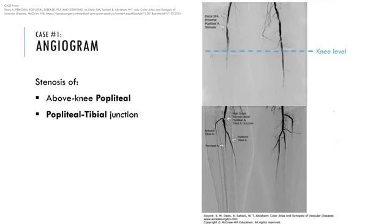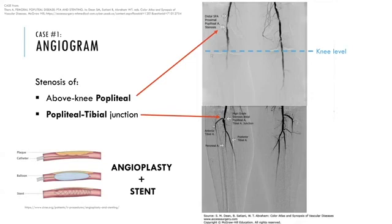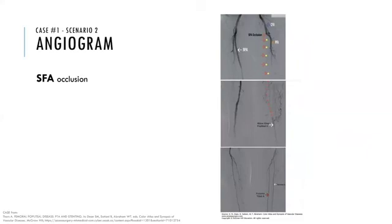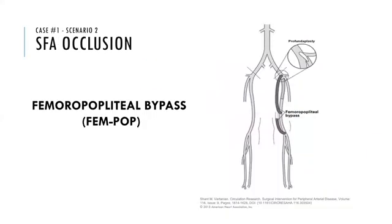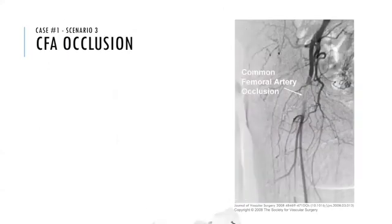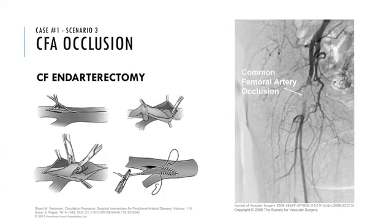Mr. Clausen is sent for an urgent angiogram, which shows severe focal stenosis of the right popliteal artery above the knee and the popliteal-tibial junction. Because he only has two short segments of disease, he undergoes angioplasty and stenting with good results. Potential complications of endovascular approaches include access-site injuries, arterial dissection or rupture, stent fracture, distal embolization, and restenosis over time. If the angiogram showed more extensive disease such as complete occlusion of the superficial femoral, a femoropopliteal bypass could be done. For focal occlusion of the common femoral, femoral endarterectomy may have better long-term results than stenting while avoiding a more extensive bypass procedure.